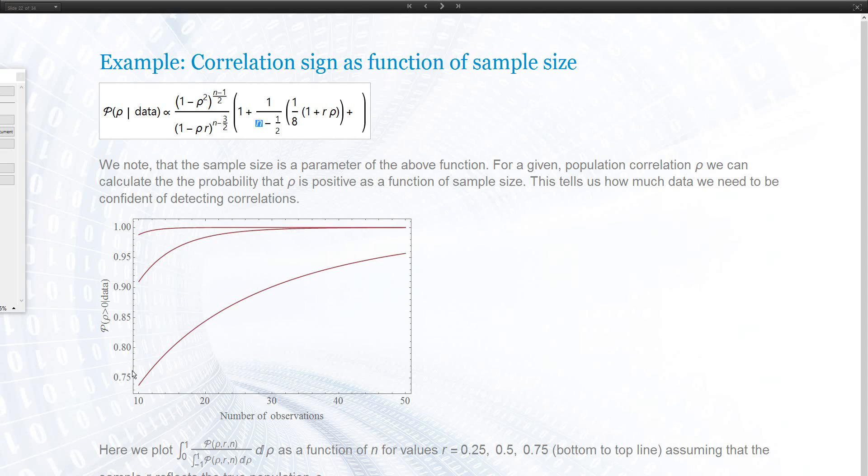That's plotted here: depending on the values of R, so 25%, 50%, 75%, how large needs our sample to be to get to some probability that we can actually determine the population parameter.